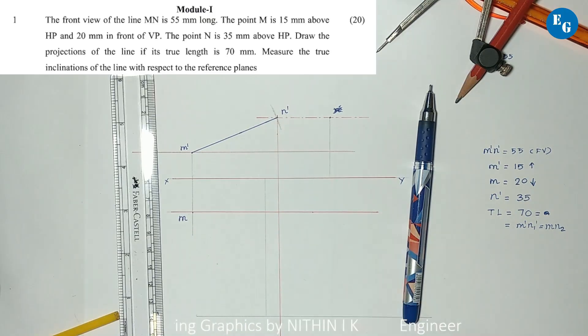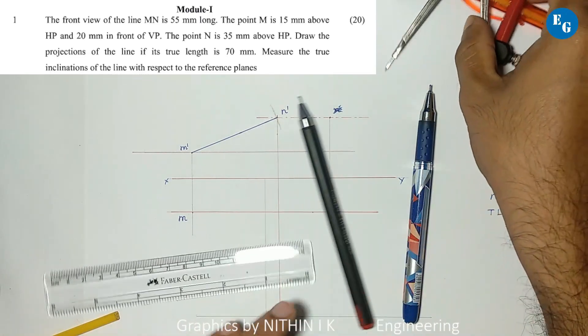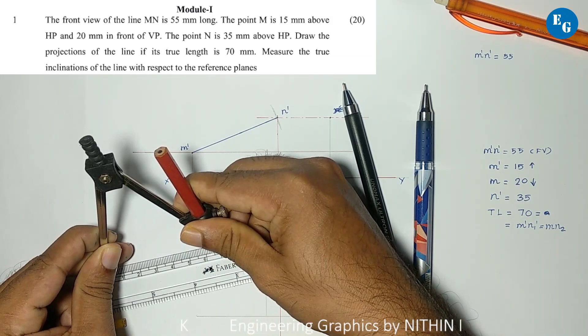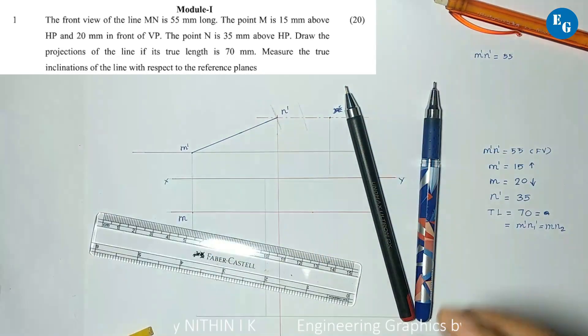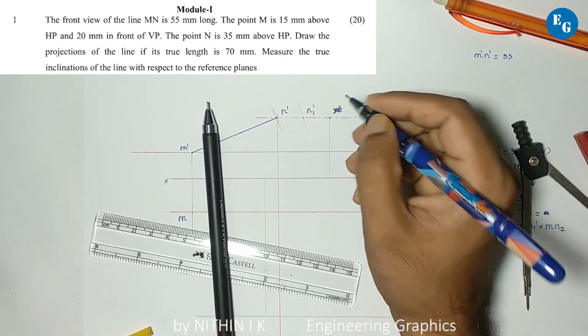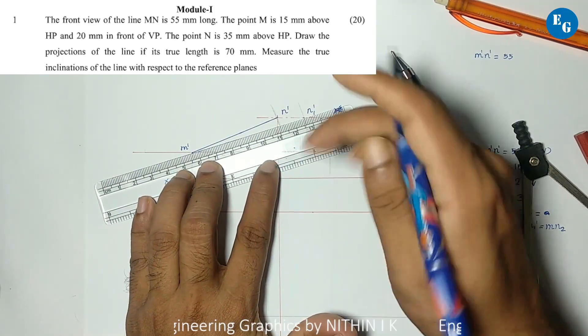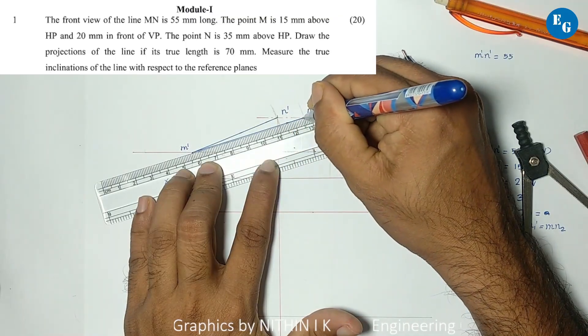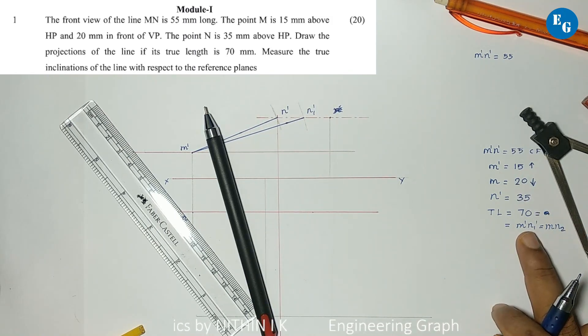In the general figure, n1 dash and n dash are the same locus because they're on the same line. Then m dash n1 dash will be 70mm length. The true length m dash n1 dash is drawn with thick line. Next, for top view, we don't have the other data. The line is inclined to both HP and VP in the general figure. Theta equals phi equals true length.